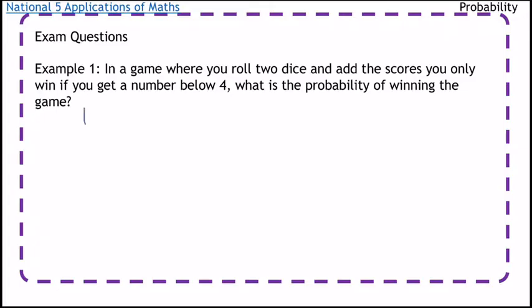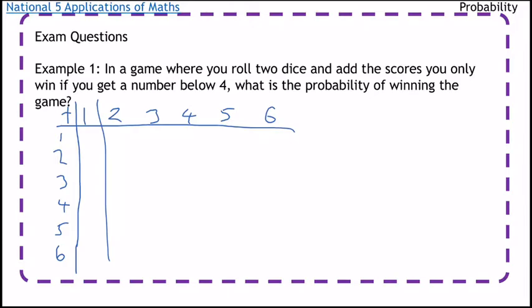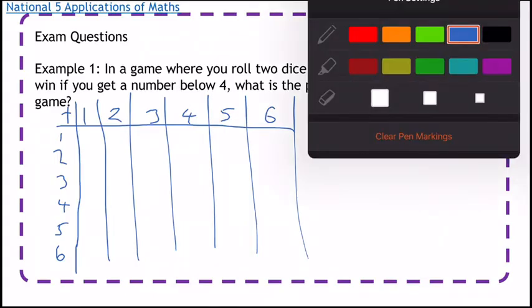First, I'll write the numbers on a dice: one, two, three, four, five, six. And what we're going to do is we're going to add these. I'll change colors here just to make it a bit easier to see.